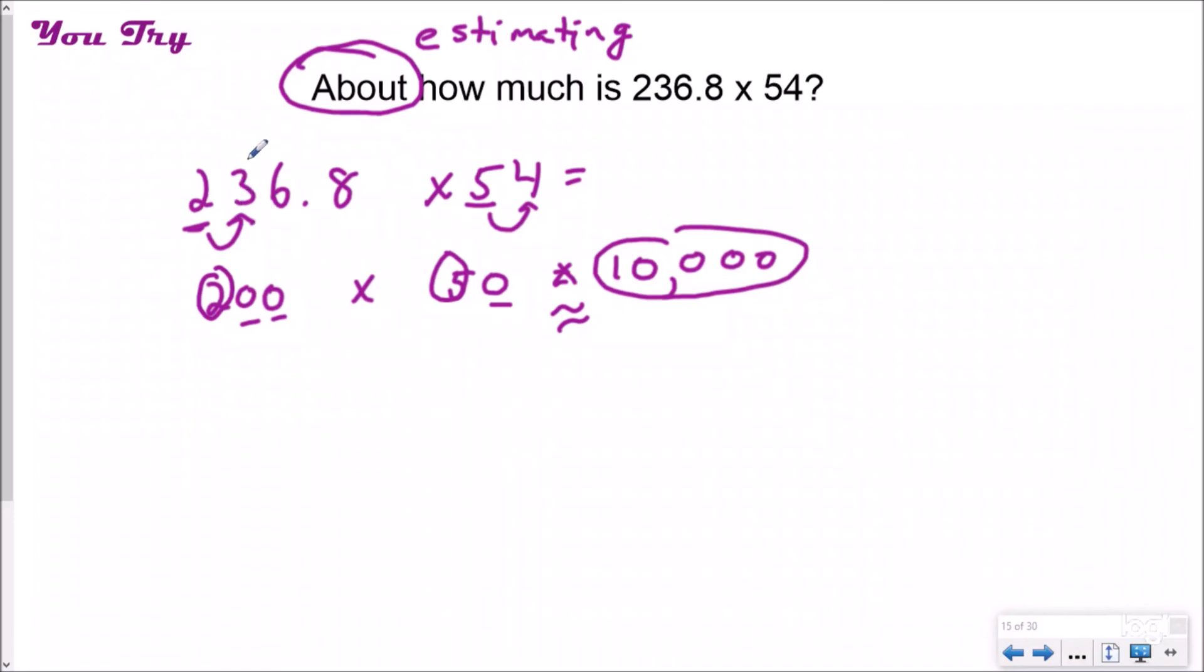Now, you rounded this number down, so you're taking groups away of 54. You rounded 54 down as well, which means your answer should be bigger than 10,000. Because when you estimated, you were taking groups away to round down. Now, if you put those groups back in, if you were solving it exactly, 10,000 would be the smallest it could possibly be. It should actually be bigger than 10,000. So that's another way to check for reasonableness.